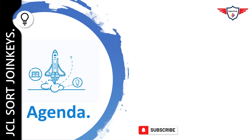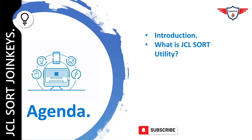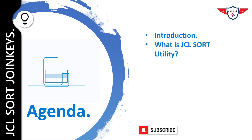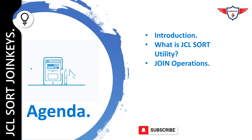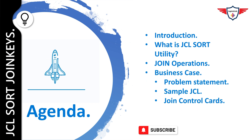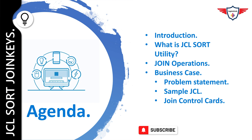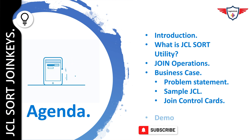We start today's session with an introduction to a mainframe system. Then we will talk about the JCL sort utility, DFSort. We will deep dive into the JCL sort join operation, followed by a business case example where you're required to generate a report from two sequential files using join keys. We will also explain all the steps of sample JCL, including join control cards. Please watch this video till the end for the live demo.